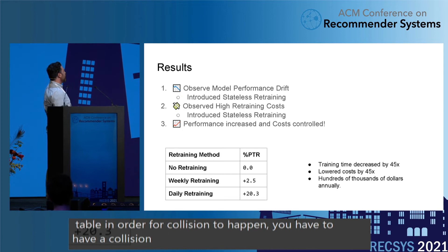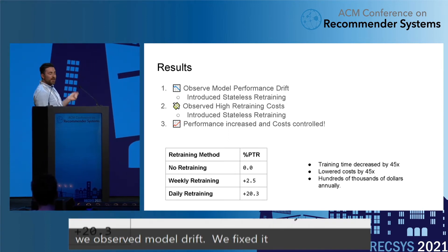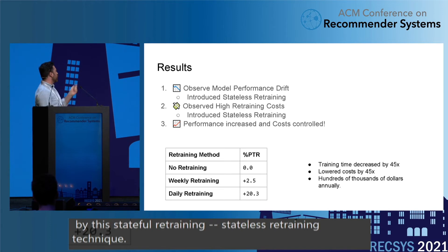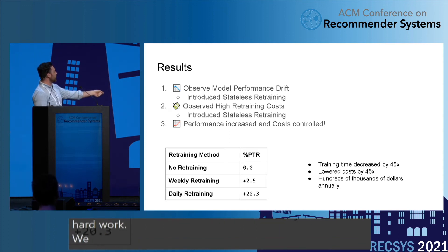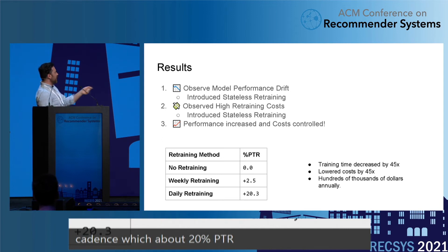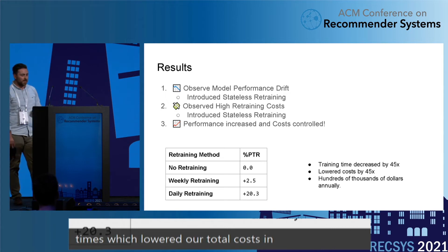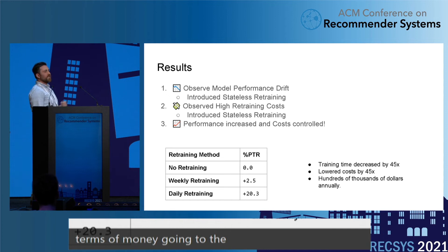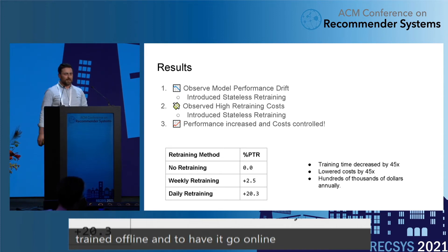You can get the collision rate down even smaller with better hashing functions — for example, more efficient data-independent hashing functions or data-dependent hashing functions that fit better to our distribution of categorical variables. Another technique is double hashing: we add another hash table, and for a collision to happen it must occur across both. In summary: we observed model drift, fixed it with stateless retraining, noticed it's expensive, then applied incremental training with off-policy evaluation and progressive validation. The result was about a 20% purchase-through rate increase over our baseline with daily cadence, and training costs decreased by 45 times — materially hundreds of thousands of dollars a year for Grubhub.